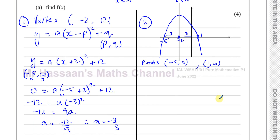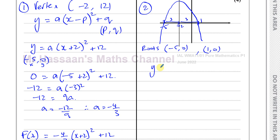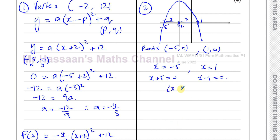If those are the roots, I can reason backwards. If x equals negative 5 and x equals 1 are roots, then the factors were x plus 5 equals 0 and x minus 1 equals 0, meaning we had the product x plus 5 times x minus 1 equal to 0. There could also be a common factor A. So before that step, we would have had y equals A times x plus 5 times x minus 1.